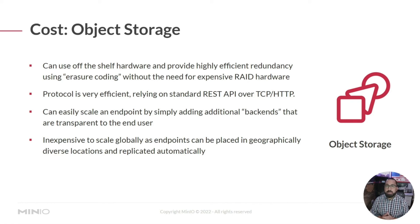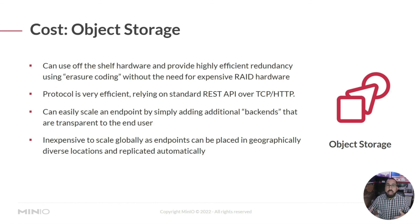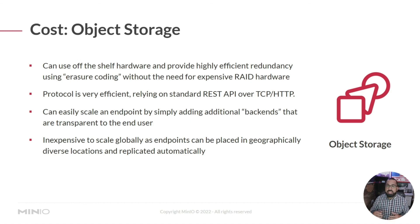Object storage can easily scale any endpoint simply by adding additional backends that are transparent to the end user — they don't need to know where data is located or what type of hardware it's on. From the end user's perspective, they're just writing files and continuously have more and more space available. On the backend, you're adding storage wherever is convenient for your organization, using whatever type of hardware or equipment you want. This makes it inexpensive to scale.